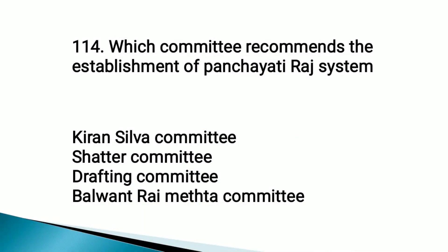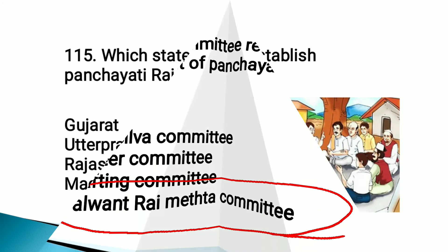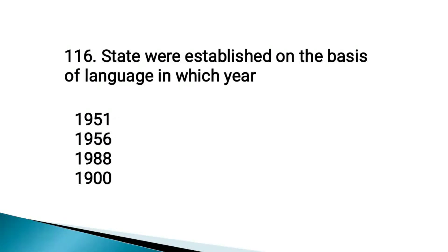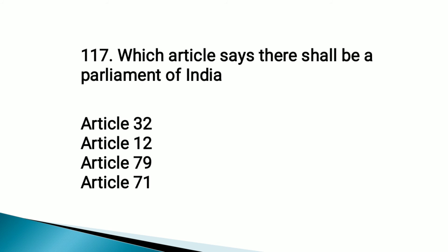Which committee recommended the establishment of the Panchayati Raj system? The Balwant Rai Mehta committee. Which state was first to establish the Panchayati Raj system? Rajasthan — this question was already discussed. States were established on the basis of language in which year? 1956. Which article says there shall be a Parliament of India? Article 79.